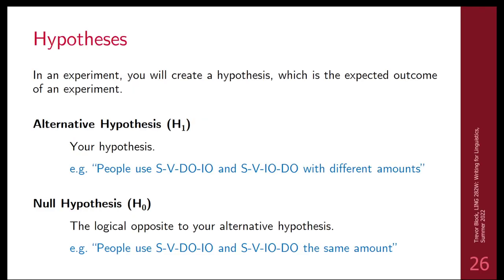With an experiment, you create a hypothesis — this is what you're expecting, and it's called the alternative hypothesis, symbolized as H1. So your hypothesis could be that people use subject-verb-direct object-indirect object and subject-verb-indirect object-direct object structures with different amounts — these are ditransitive verbs with two different word orders: 'I gave Mary the pen' versus 'I gave the pen to Mary.' The hypothesis is that they're used in different amounts, meaning people prefer one over the other.